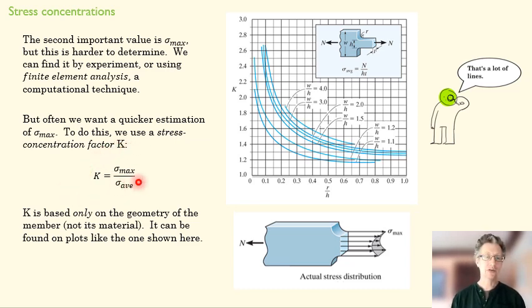And this is sigma max over sigma average. Sigma average, we figured out on the previous slide, right? We're going to find that normal stress at the highest place, which is going to be, in this case, right here. And then we're going to find out K from our plot, and that will allow us to solve for sigma max.